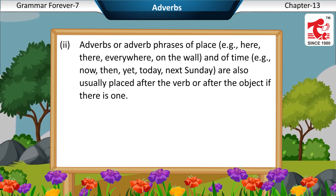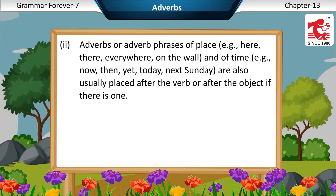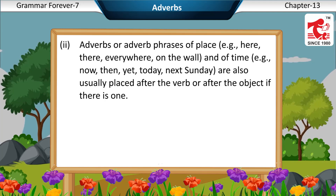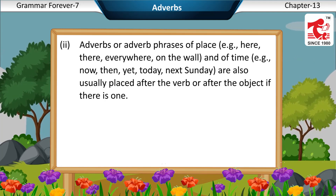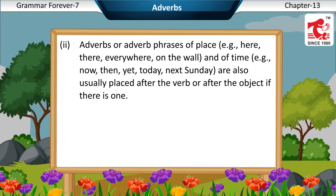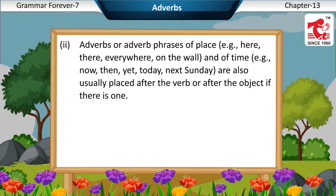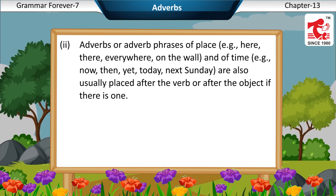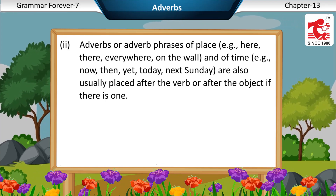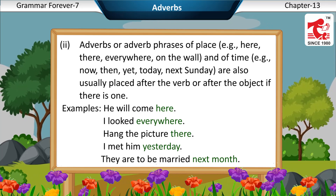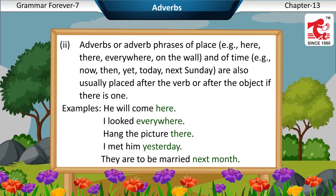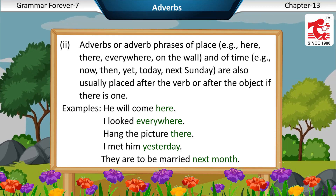Second, adverbs or adverb phrases of place — examples: here, there, everywhere, on the wall — and of time — examples: now, then, yet, today, next Sunday — are also usually placed after the verb or after the object if there is one. Examples: He will come here. I looked everywhere. Hang the picture there. I met him yesterday. They are to be married next month.